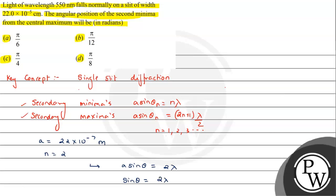So from here, sinθ will be equal to 2λ/a. Now let's substitute the values. λ is given as 550 nanometers = 550×10^-9 meters, divided by a which is given as 22×10^-7 meters.